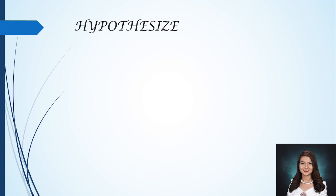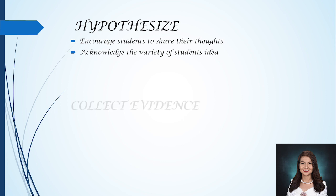Next is hypothesize. The students form rules in their minds as they observe. In this stage, encourage the students to share their thoughts. Assure them that there are no wrong hypotheses. Acknowledge the variety of students' ideas, but also streamline them. Later on, test only the unique hypotheses.